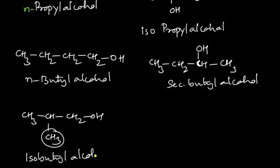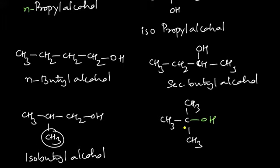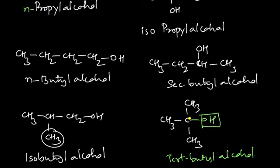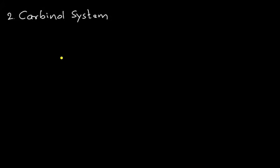Finally: (CH₃)₃COH — this molecule is termed tertiary butyl alcohol because the OH group is attached to a carbon directly connected to three alkyl groups. Therefore it is tertiary butyl alcohol. This completes the common system. The second way of naming alcohols is the carbinol system.